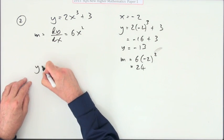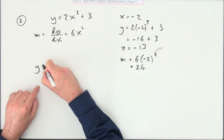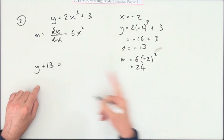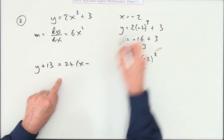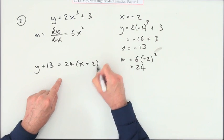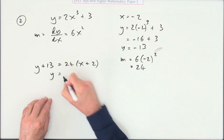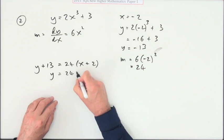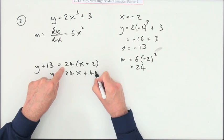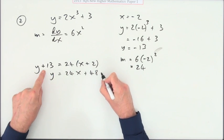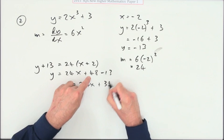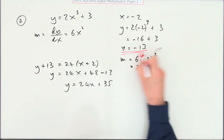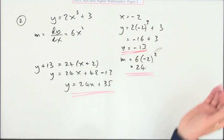So what's the equation of this tangent? y minus the y-coordinate, so y plus 13 is m which is 24 times x minus the x-coordinate which is a negative 2, so plus 2. That might do on its own, so you've got 24x plus 48 minus 13, so there we go, 24x plus 35. There we are.